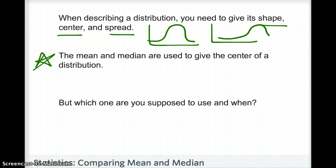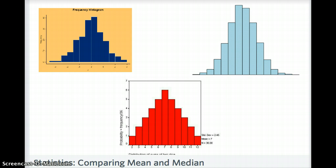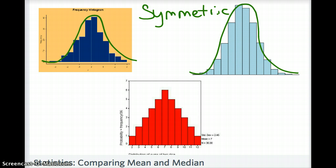The question is which one — mean or median — are you supposed to use, and when? There's a difference depending on what type of distribution you have. A distribution just describes what your graph looks like — your bins and how many times those numbers appear. Here you can see three distributions on this graph, and each one is roughly symmetrical, or bell-shaped, in form. When you have symmetrical data, your mean and your median are at about the same point.